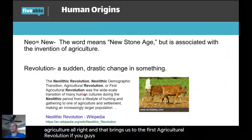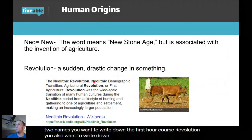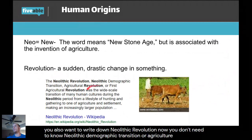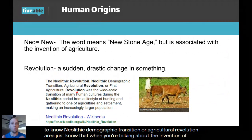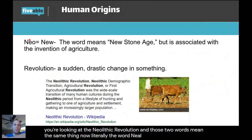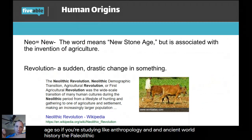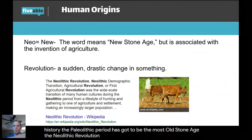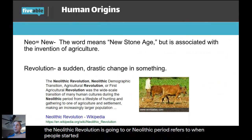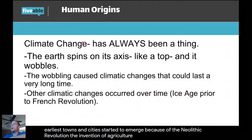If you're writing notes, know this by two names: the First Agricultural Revolution and the Neolithic Revolution — they mean the same thing. The word 'neolithic' literally means 'new stone age.' The Neolithic period refers to when people stopped moving around so much and started settling down in settled societies. Your earliest towns and cities started to emerge because of the Neolithic Revolution — the invention of agriculture.